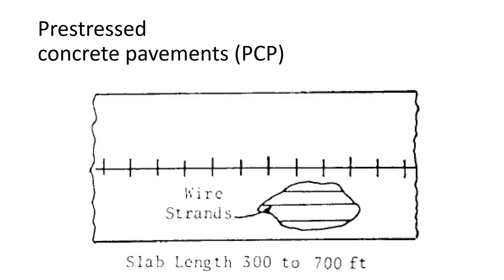Pre-stressed concrete pavement — you may have studied pre-stressing in structures classes. Pre-stressed bridge beams are very common. You put wire strands in and jack them during construction, putting compression through the structure — in this case the pavement. It holds everything together and is a form of reinforcement. The downside is it's more expensive; you have to pour the concrete, let it cure, and then apply tension to the strands to put compression into the concrete.